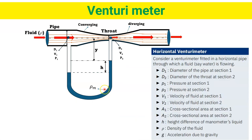Consider a Venturimeter fitted in a horizontal pipe through which a fluid is flowing. Section 1 is the inlet and section 2 is the throat. D1 is the pipe diameter at section 1; D2 is the throat diameter at section 2. P1 and P2 are pressures at sections 1 and 2. V1 and V2 are fluid velocities; A1 and A2 are cross-sectional areas. H is the height difference of the manometer liquid, ρ is fluid density, and g is acceleration due to gravity.